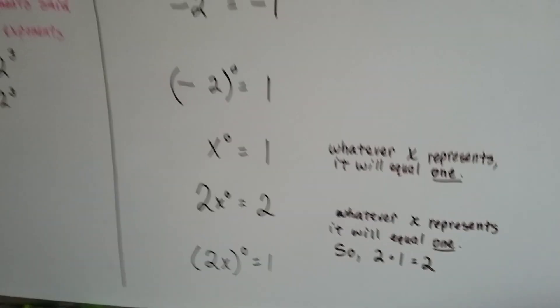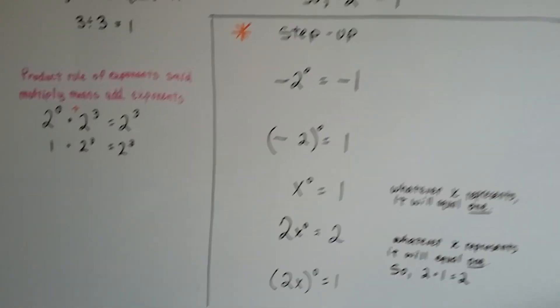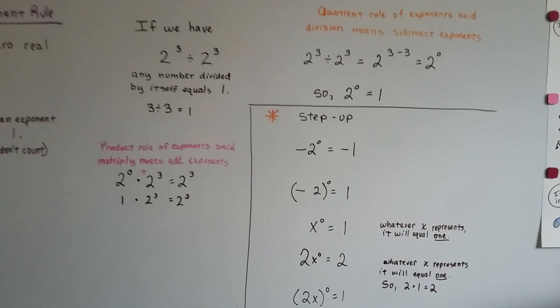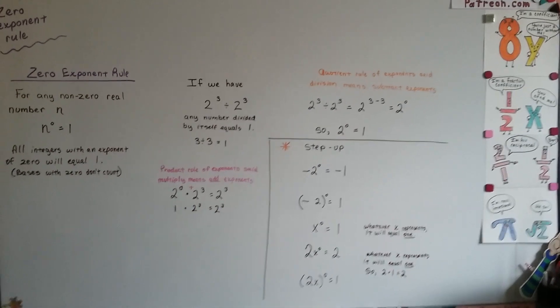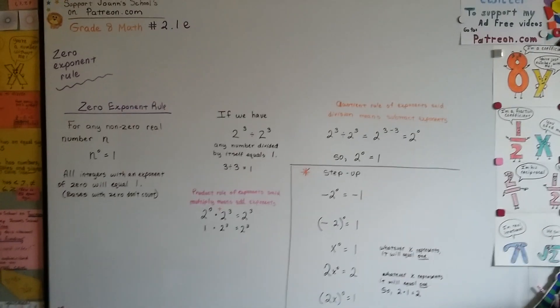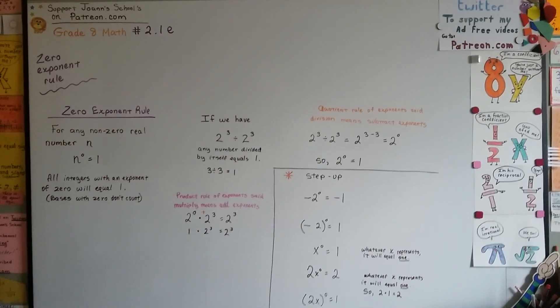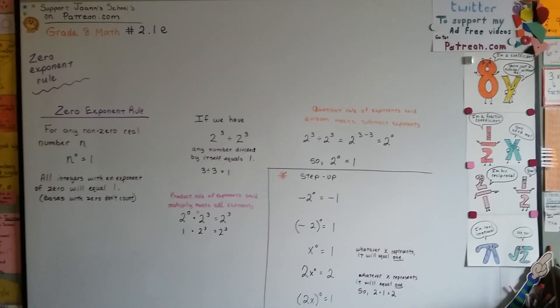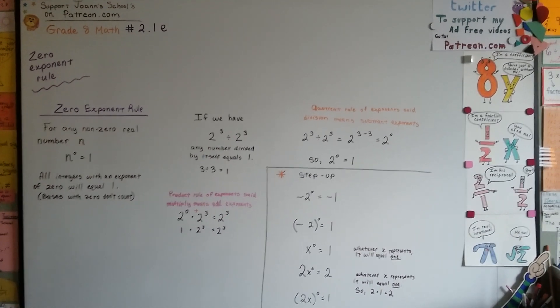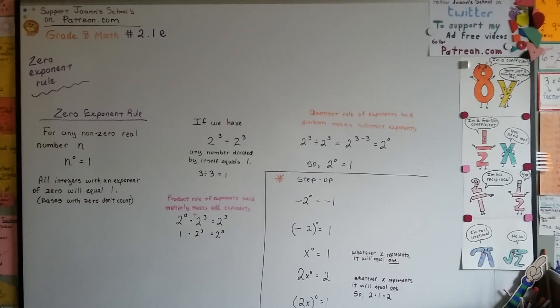So that's a step up. You don't need to really know that, but I thought I'd throw that in for you bright guys that are watching these videos. So that's the zero exponent rule, and we're going to continue talking about some of the other rules, like negative exponents, and I'll see you there. Bye.